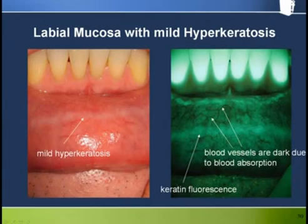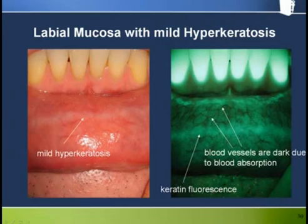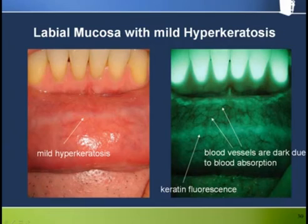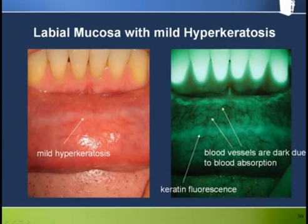An analogous phenomenon to linea alba on the buccal mucosa can occur on the labial mucosa due to irritation from the front teeth. In this case we see classic mature non-inflamed hyperkeratosis, which appears brighter under Velscope due to keratin fluorescence. Note also how well the dense collections of blood vessels can be visualized under fluorescence due to loss of fluorescence from blood absorption.